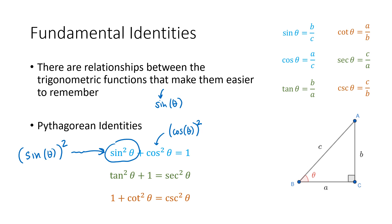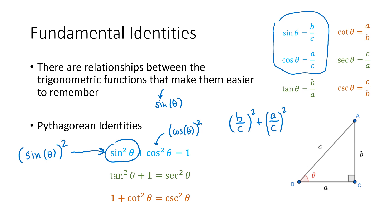So why do these identities work? Let's take a look at the first one, colored in blue. Sine of theta is b over c, so if I square sine of theta, that's (b over c) squared. And cosine of theta squared is (a over c) squared. That's going to be b squared over c squared plus a squared over c squared. With a common denominator, that's b squared plus a squared over c squared. But the Pythagorean theorem says that a squared plus b squared does equal c squared.